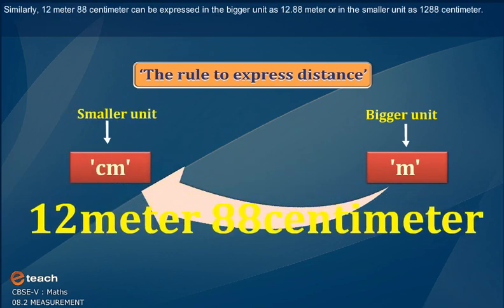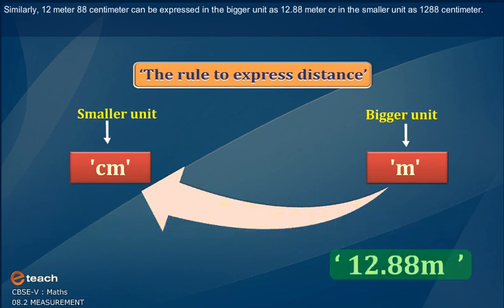Similarly, 12 m 88 cm can be expressed in the bigger unit as 12.88 m or in the smaller unit as 1,288 cm.